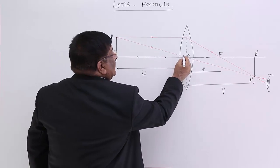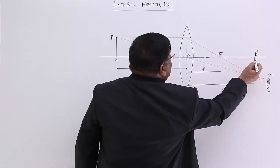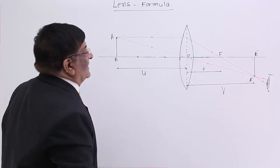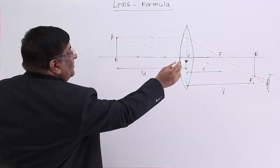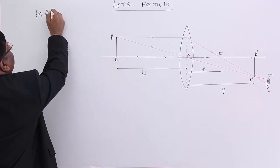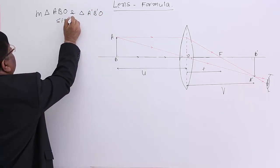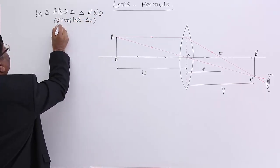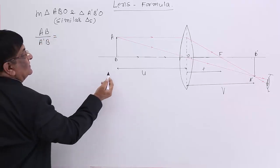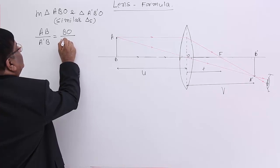We take two triangles — triangle ABO and triangle OB'A' — which are similar to each other. The opposite angles at O are equal, the right angles are equal, so by the third angle the triangles are similar. Their ratio gives us: AB / A'B' = BO / OB'. This is equation 1.